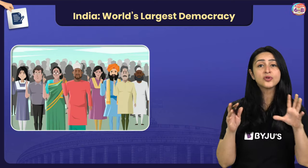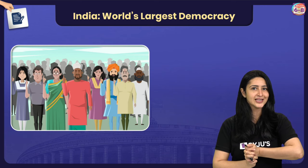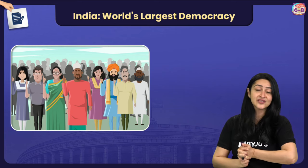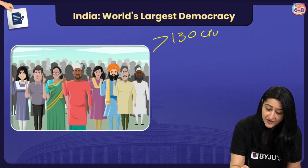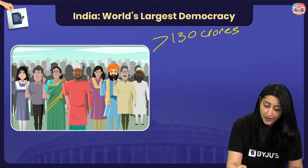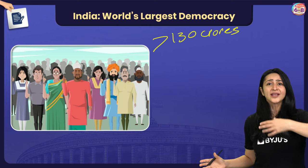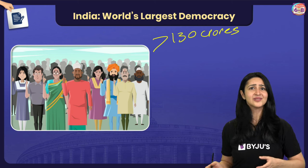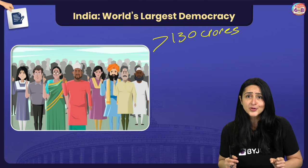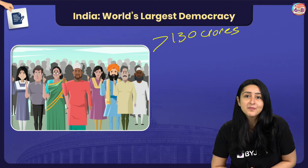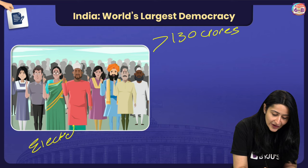Let's start by understanding what is meant by the term democracy, and then we will further understand how people elect their representatives. India is the largest democratic country in the world, with a population of more than 130 crore people. With such a large population, it's not feasible for all of these people to come together and make decisions on every issue. That is why in a democracy, people rule through elected representatives.